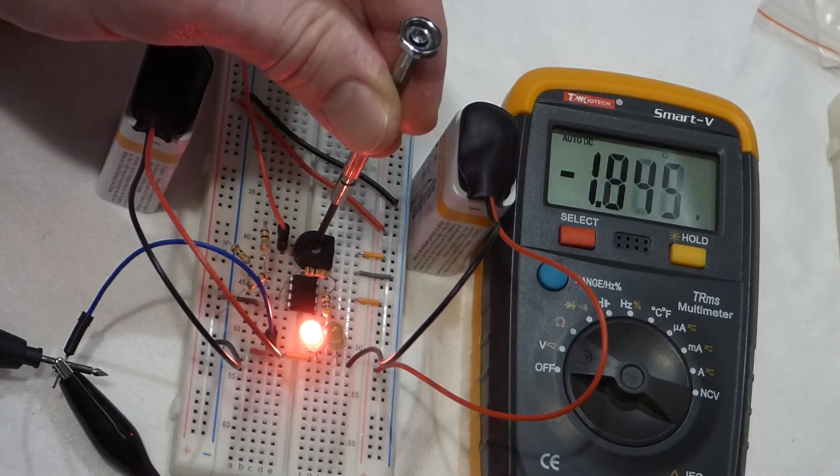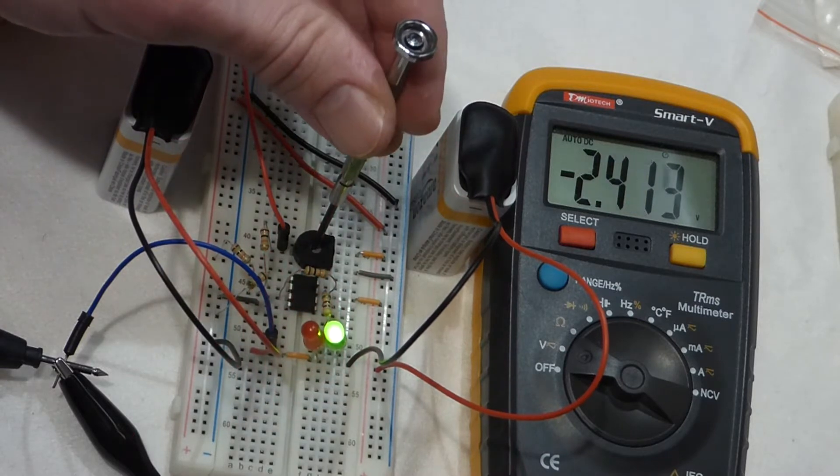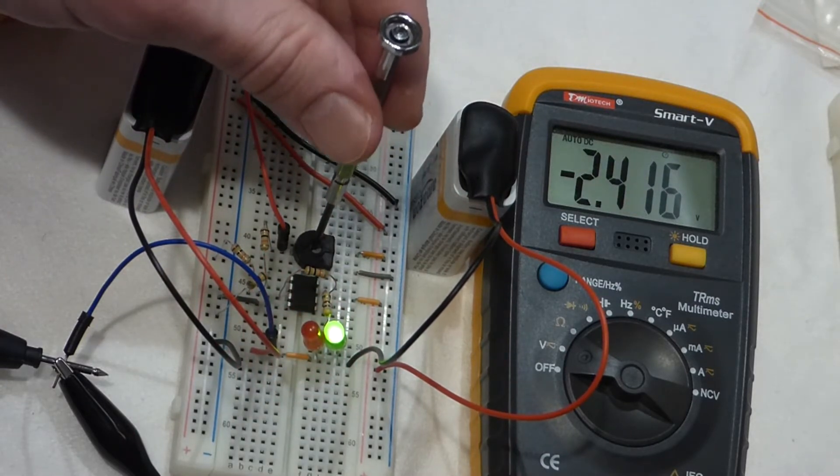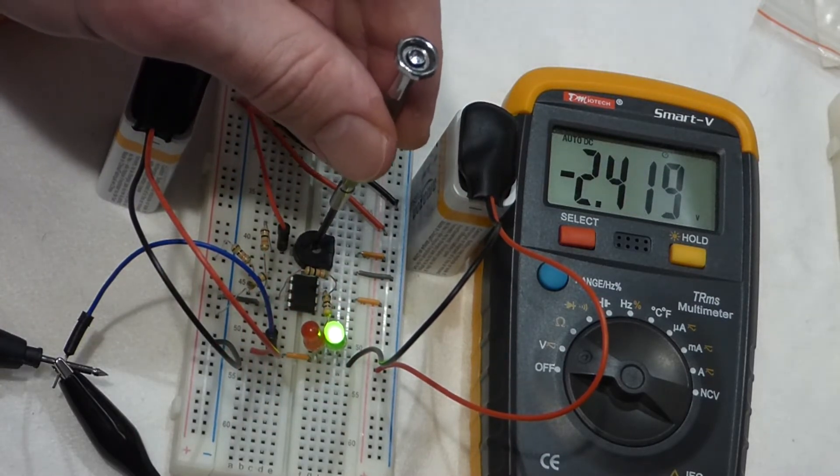The red LED is on and now when we get about 2 volts you notice the green LED comes on. So I had about negative 2 volts then it changed.